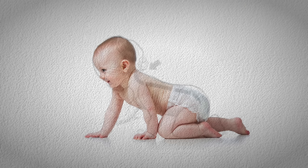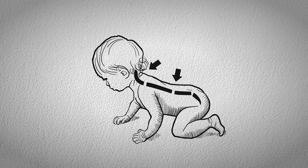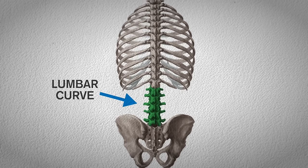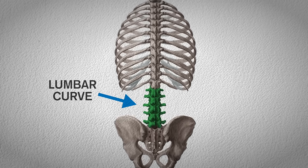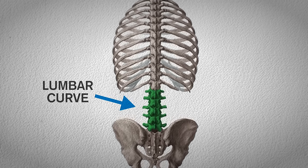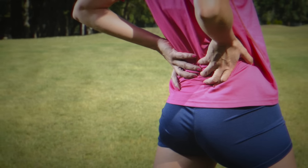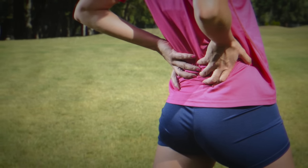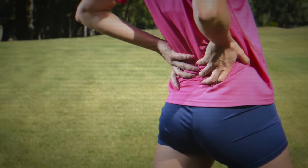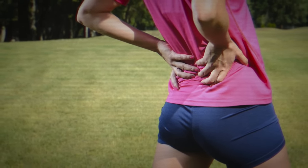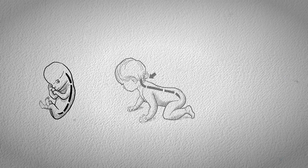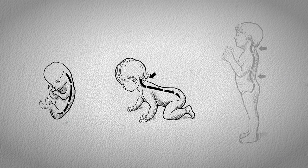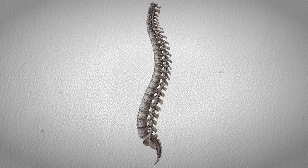As you start to creep and crawl, the secondary curve of the lower spine now starts to form. This is the lumbar curve, between the ribcage and the pelvis. This is the final curve to develop and is responsible for that arch in the lower back — from a C to an S. As you start to walk, this all gets strengthened.